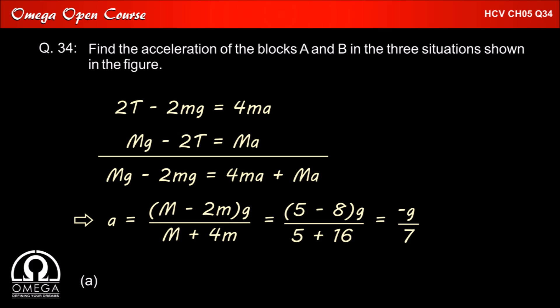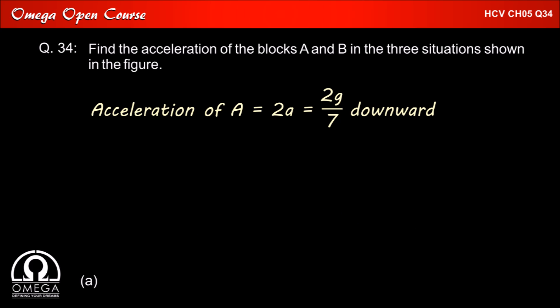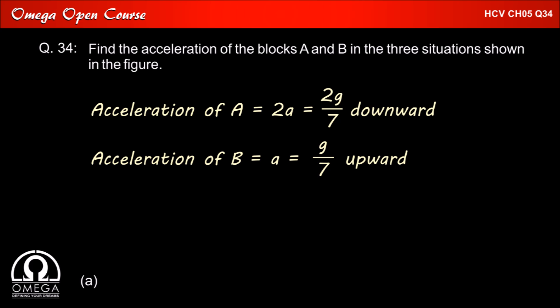The negative value signifies that the acceleration of the block is opposite to the direction we assumed. So for block A, since we assumed acceleration 2A in the upward direction, it will actually move with acceleration 2G/7 in the downward direction. And since we assumed acceleration A for block B in the downward direction, its acceleration will be G/7 in the upward direction.